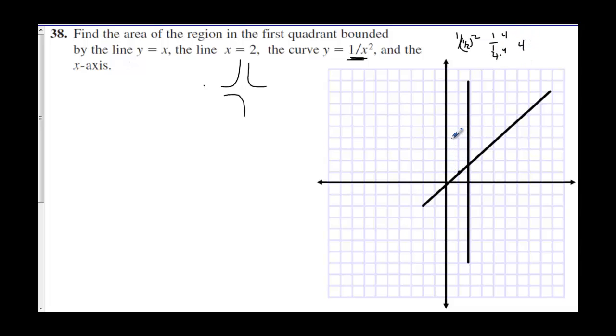So 1 half gives us 1, 2, 3, 4, and then it goes up very quickly. So we have something like that. And 2 will give you 1 fourth, so it goes down very quickly too. So something like that.